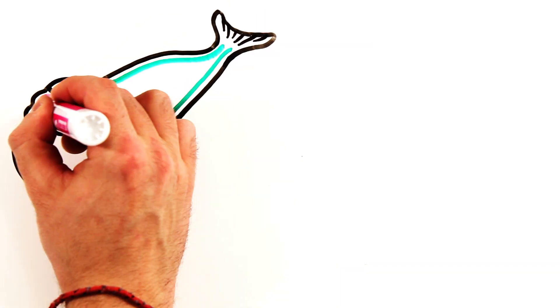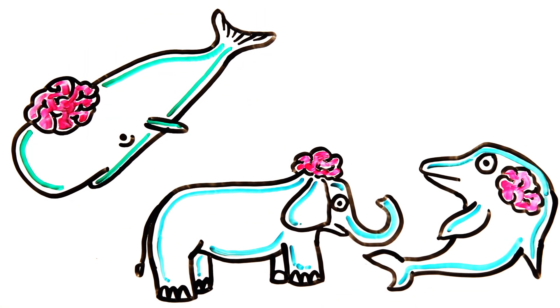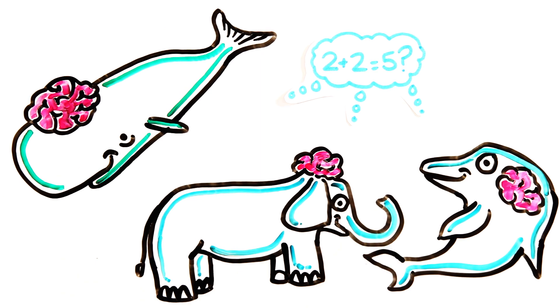Besides, bigger isn't always better. Sperm whales, elephants, and dolphins all have larger brains than humans, and while they are smart, their cognitive abilities are less than our own.